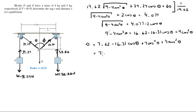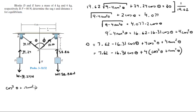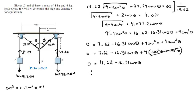Subtracting 9 from both sides and adding 4 sin²θ to both sides, you get: 0 equals 7.62 minus 16.31 cosine of theta plus 4 cos²θ plus 4 sin²θ. Factoring out the 4 gives cos²θ plus sin²θ, which equals 1 by trigonometric identity. So 0 equals 7.62 minus 16.31 cosine of theta plus 4, giving cosine of theta equals 11.62 over 16.31, and therefore theta equals 44.56 degrees.